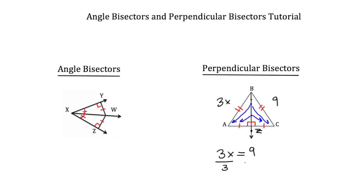3X is equal to 9. We'll divide by 3 on both sides. The 3's will cancel. And X will be equal to 3.